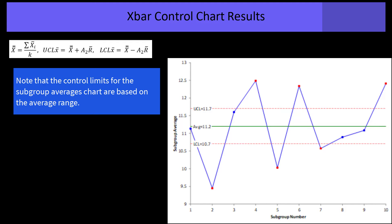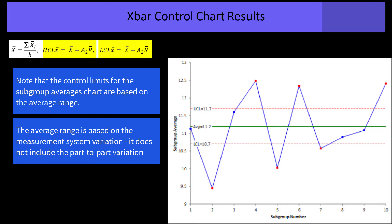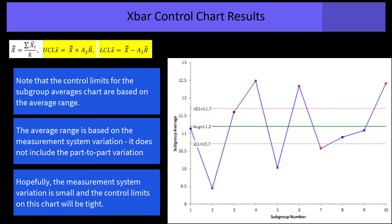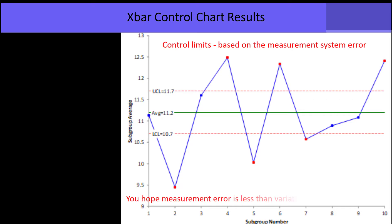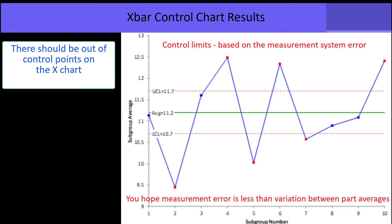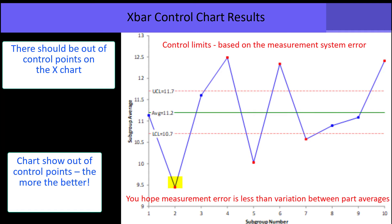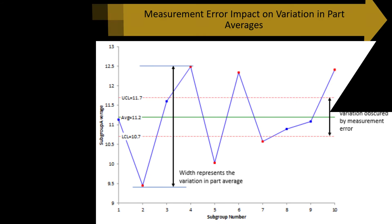Take a look at the control limits for the subgroup averages — they're based on the average range, which comes from the measurement system variation and does not include part-to-part variation. So you're hoping the measurement system's variation is small and the control limits on this chart are tight, which means you want the points to be out of control. Control limits are based on the measurement system error, so you hope the measurement error is less than the variation between the part averages. There should be out-of-control points on the X-bar chart — and there are 6 out-of-control points on this chart. The more you have, the better.